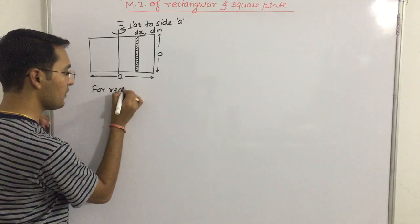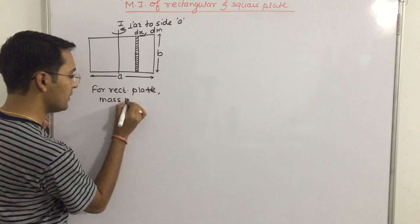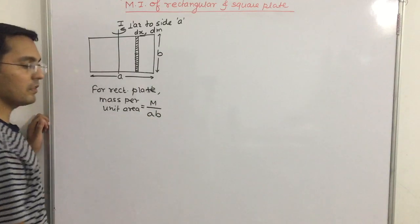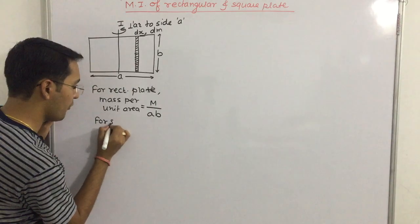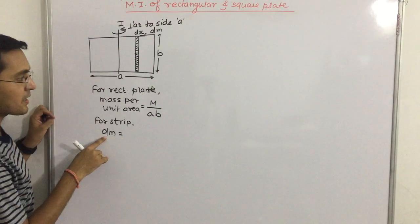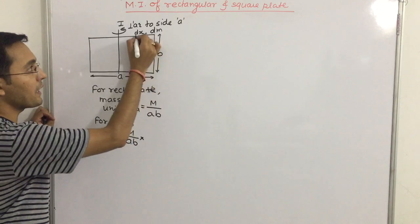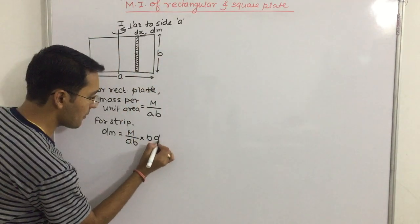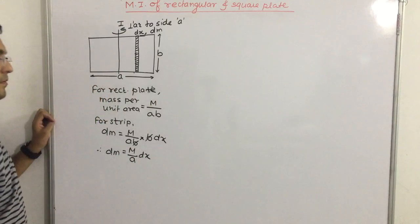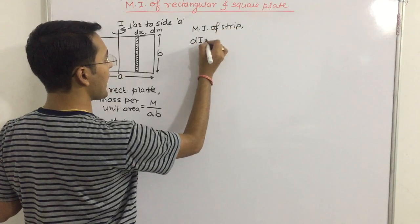Mass per unit area, that is m by AB. For strip, mass dm is equal to mass per unit area into area of strip. Length is B and breadth is dx, so area is B dx. dm is equal to m by A dx.